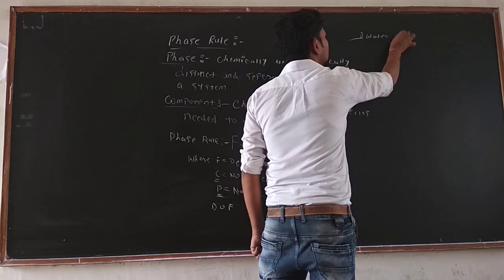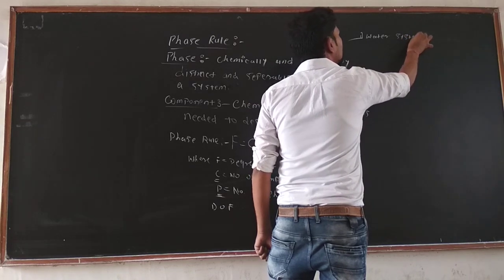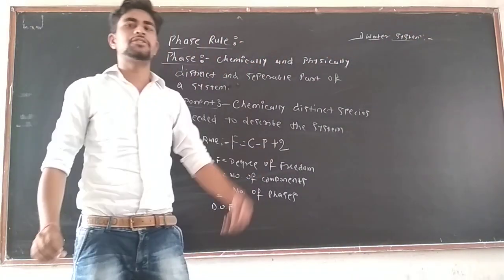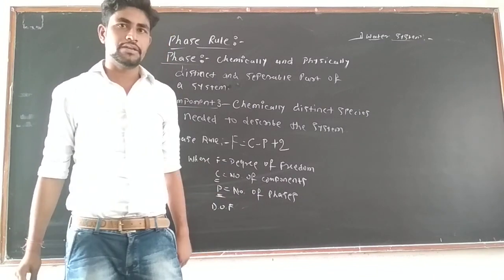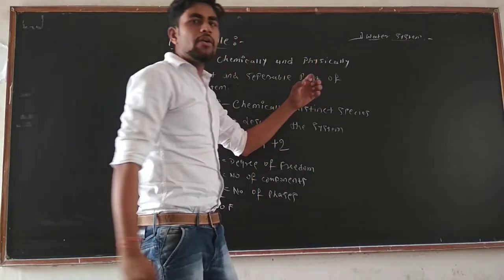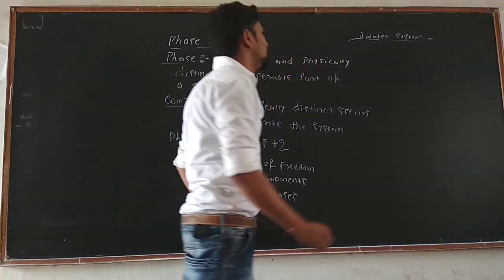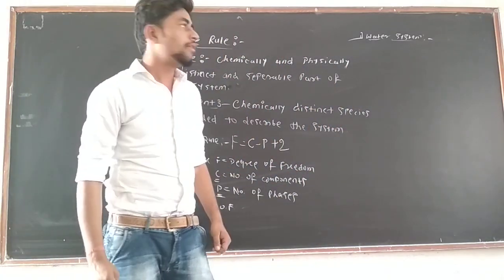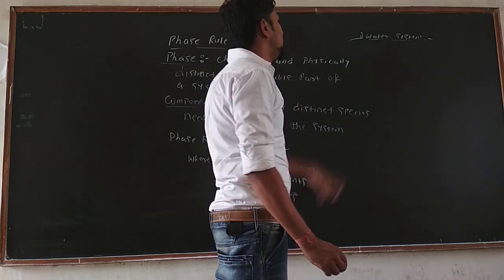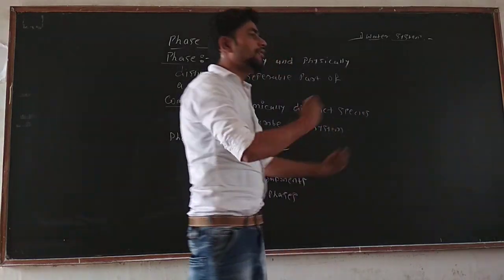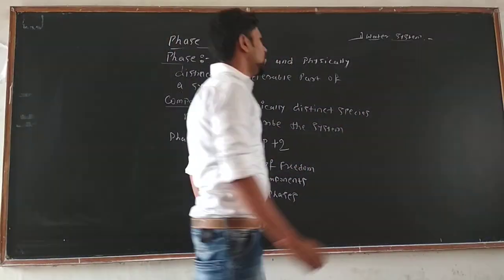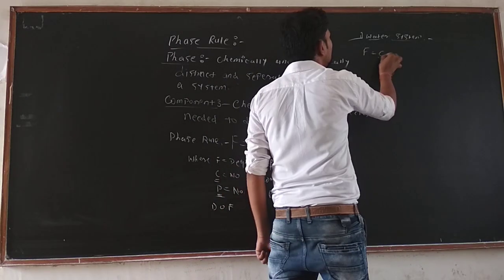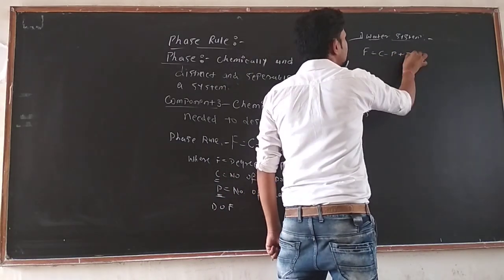First we will explain the water system. The water system is applicable for both chemistry students and geology students. We calculate the degree of freedom of the water system on the basis of the number of components as well as the number of phases. We apply the phase rule formula: F = C - P + 2.